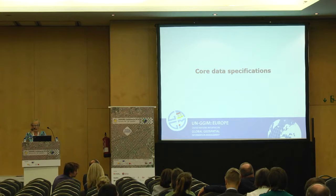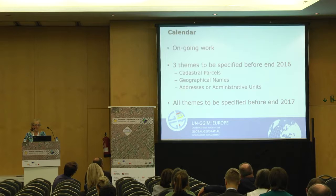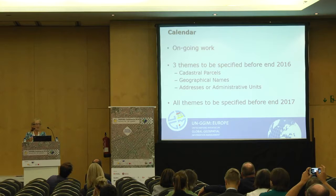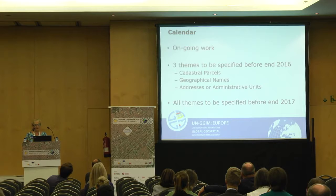The second step is core data specifications — this is ongoing and even beginning work. Our calendar has three themes to be specified before the end of this year. The candidates are cadastral parcels, geographical names, and addresses, or administrative units. At the beginning we thought administrative units would be simple, but when you dig deeper it is always more complex than imagined. All themes will need to be specified before the end of this year.